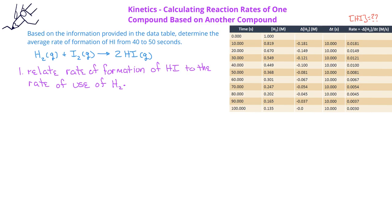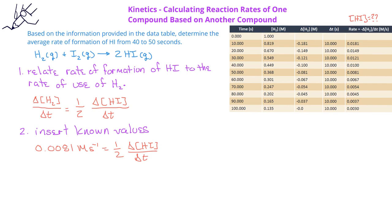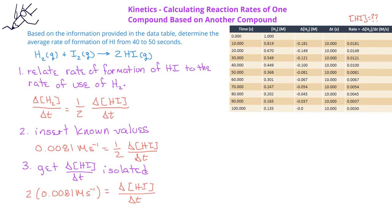You should recall that for this particular reaction, the rate of consumption of hydrogen is equal to one-half the rate of formation of hydrogen iodide. If we use the data for the rate of consumption of hydrogen from 40 to 50 seconds, that value would be 0.0081 molarity per second. This would be equal to one-half the rate of change of hydrogen iodide. If we rearrange the equation, we would have 2 times 0.0081 molarity per second equals the rate of formation of hydrogen iodide, which is 0.0162 molarity per second.